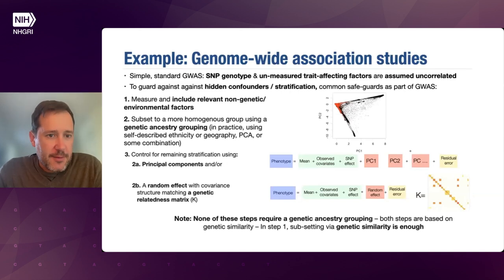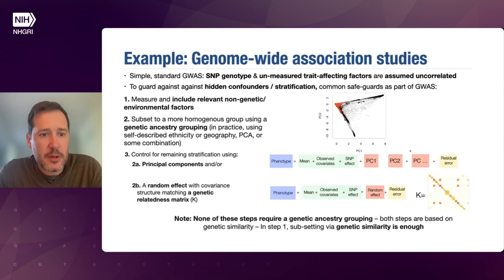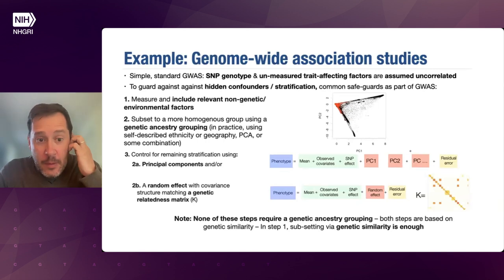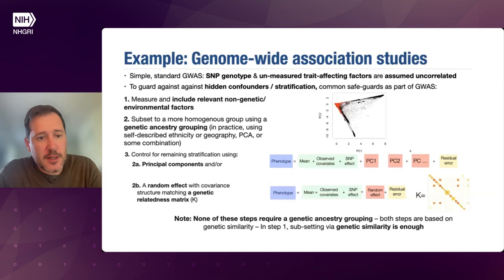But if you can't measure the environmental factors, then another approach is to try to make the group more homogeneous. In terms of controlling background genetic variation, you might try to limit yourself to a more homogeneous genetic ancestry grouping. In practice, many people do this using the self-described ethnicity of the individuals, or geography, or a summary of the genetic data such as PCA, or some combination of the two.